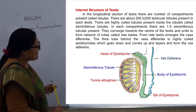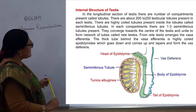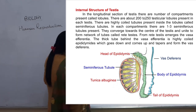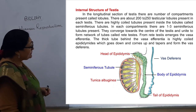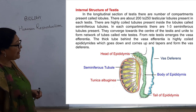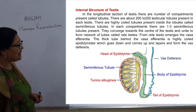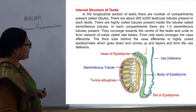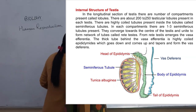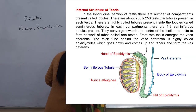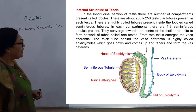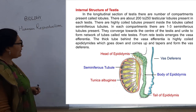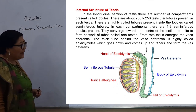From rete testes emerge the efferent tubules called vasa efferentia. The thick tubule behind the vasa efferentia is the highly coiled epididymis, which goes down and comes up, tapers, and forms the vas deferens.